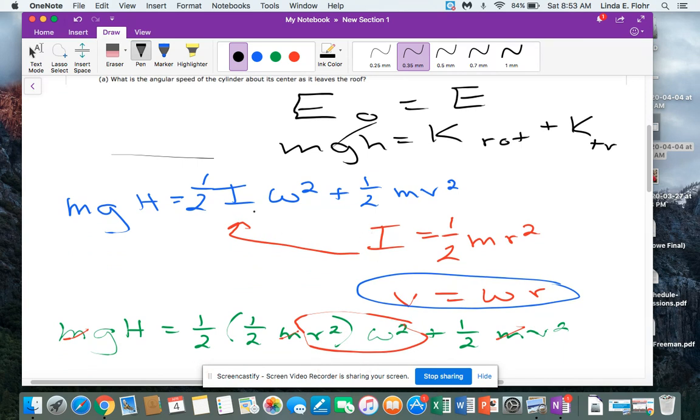Alright, so I'm going to substitute in my rotational inertia. So mgh equals one half times, here's the substitution, one half mr squared times omega squared plus one half mv squared.